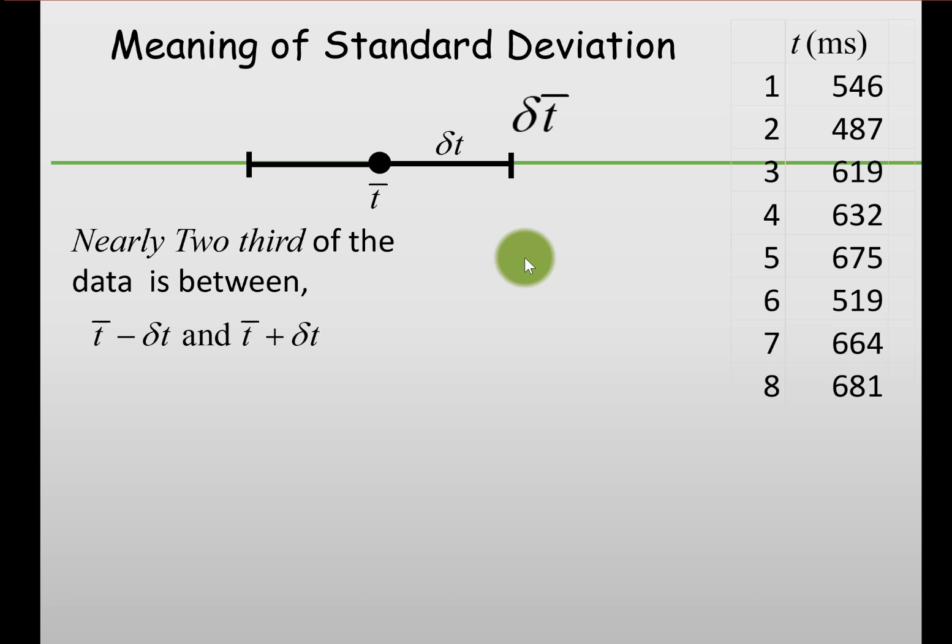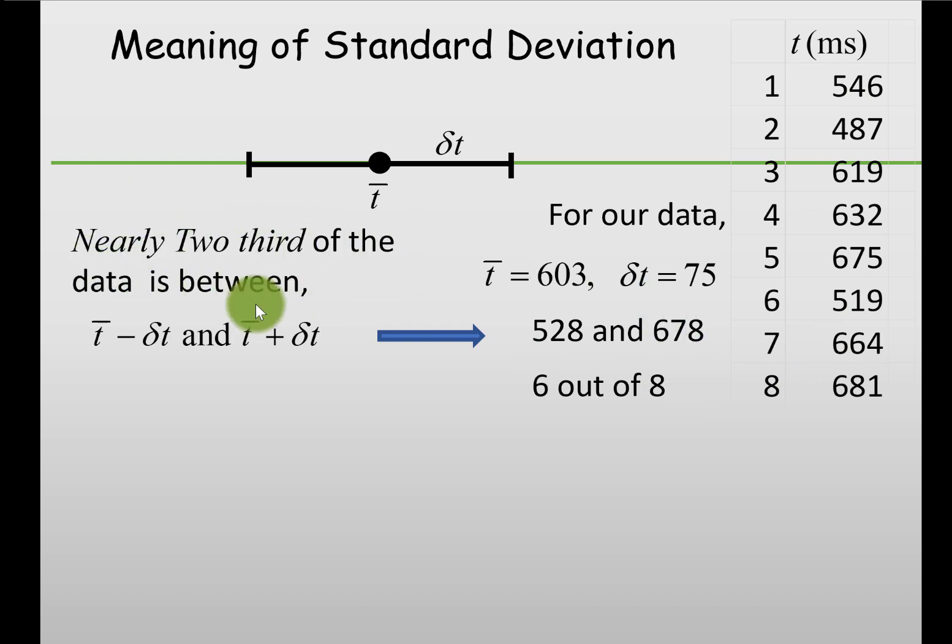For our data, this range turns out to be 528 and 678. If we look at the data carefully, what we find is there are six out of eight total data within this range, meaning nearly two-thirds of the data is in this interval. This interval is also called the confidence interval, so our confidence level is nearly two-thirds.